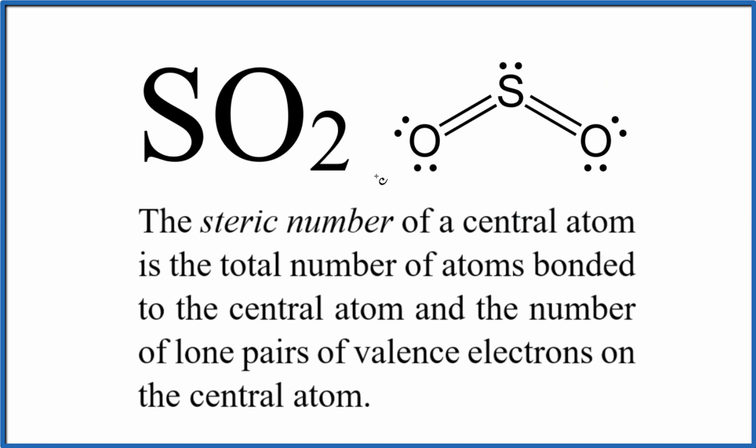To find the steric number for sulfur dioxide, we count up the total number of atoms bonded to the central atom, to that sulfur. So we have one, two, two oxygen atoms bonded to the central sulfur.